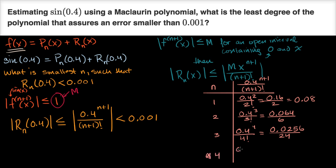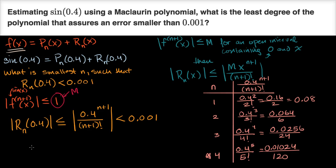Let's verify n equals four. That gives 0.4 to the fifth power over 5 factorial. 4 to the fifth is 1024, so this is 0.01024 over 120. This is definitely less than 0.001. So when n equals four, the remainder for our fourth degree Maclaurin polynomial evaluated at x = 0.4 is for sure less than 0.001. That is the least degree of the polynomial that assures an error smaller than one thousandth.